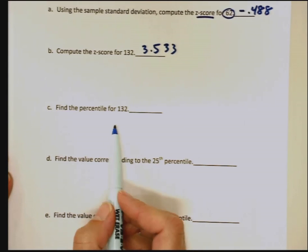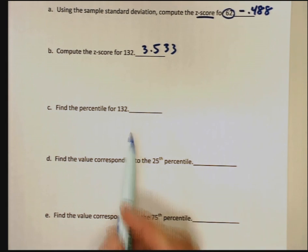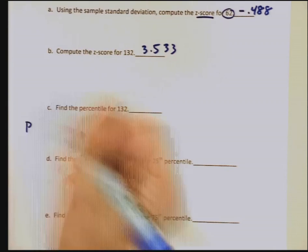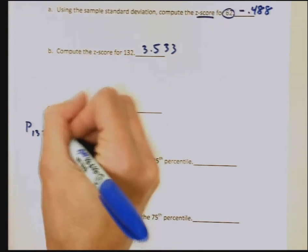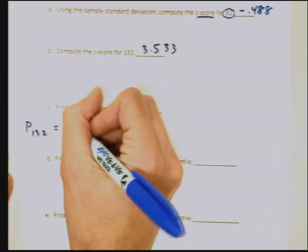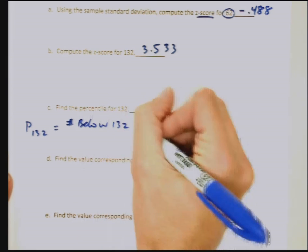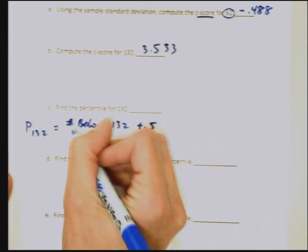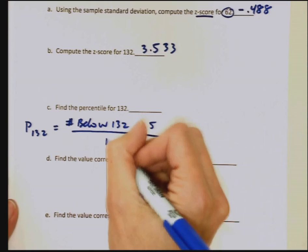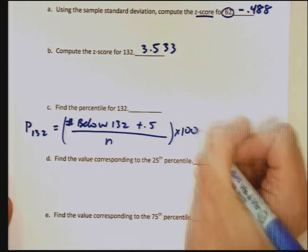Now we're going to move on to percentiles. Percentiles also compare values to our list. For the percentile, so this would be the percentile for 132, we want to know how 132 compares to everybody else in terms of a percentage. So we want the number of scores below 132. To that, we're going to add 0.5 for an adjustment in case there's some that are equal to 132. And then we're going to divide by n. Take all of that and multiply it by 100 so we get a percentage.